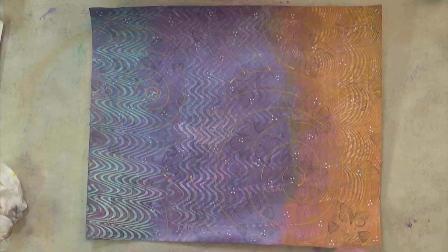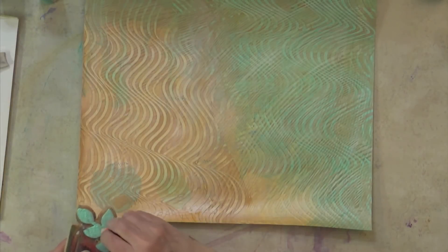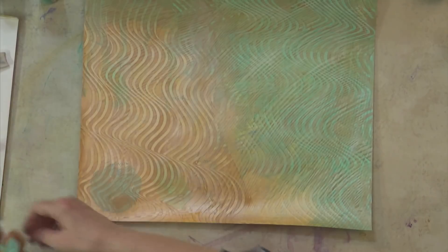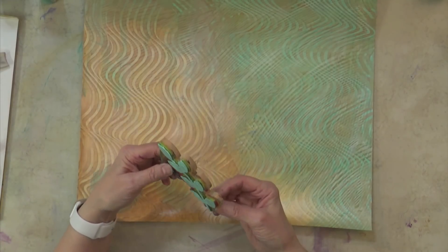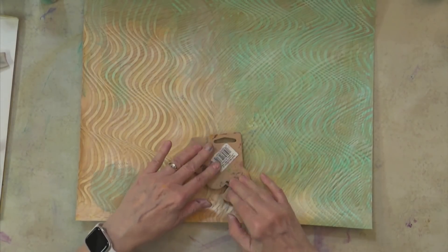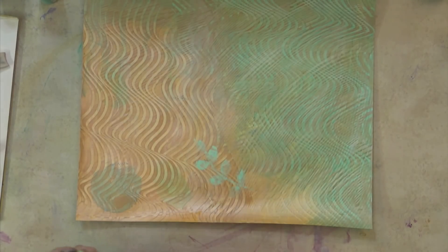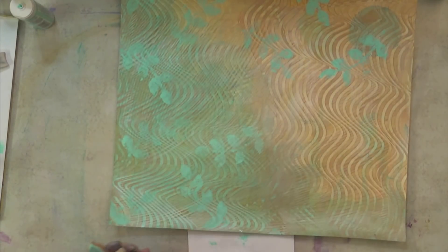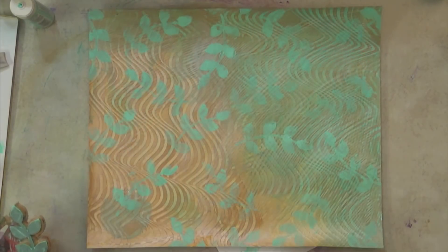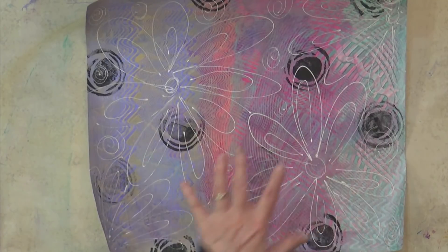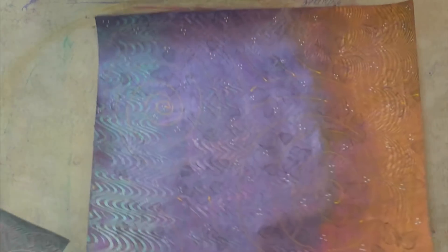We're gonna let this one live. This is an inexpensive stamp from I think it was Michaels, maybe Hobby Lobby. I love how the layering in the background from the paste paper turned out on that one.